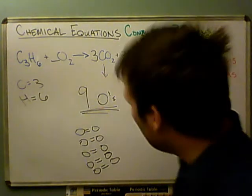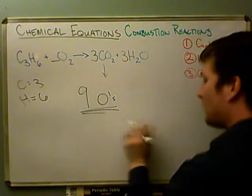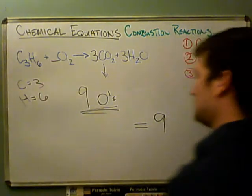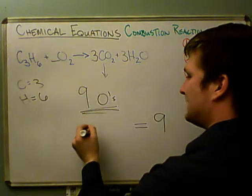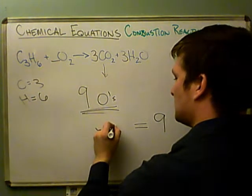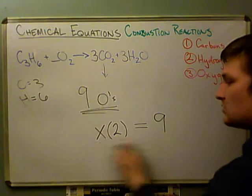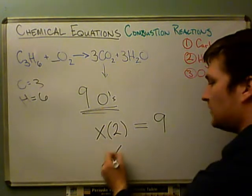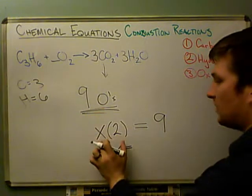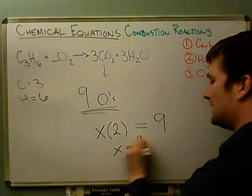So how do we deal with this? We say: I need nine oxygens on the right side, and on the left side I have some coefficient x times O₂, which contributes two oxygens. So x times two equals nine. To solve for x, I divide both sides by two, and I get x equals nine halves.